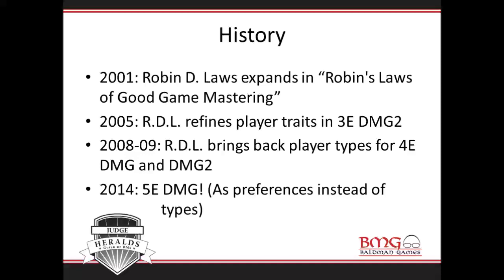In 2001, this really takes forward to the modern era where Robin Laws — and if you haven't read anything about Robin Laws, definitely do. Robin's Laws of Good Game Mastering is great. Hamlet's Hit Points is fantastic. He had great games like Gumshoe. He expands in that book the player types that Blackow created. And then in 2005, he writes for the third edition DMG 2 — that's also a really good read, done in a slightly different way.